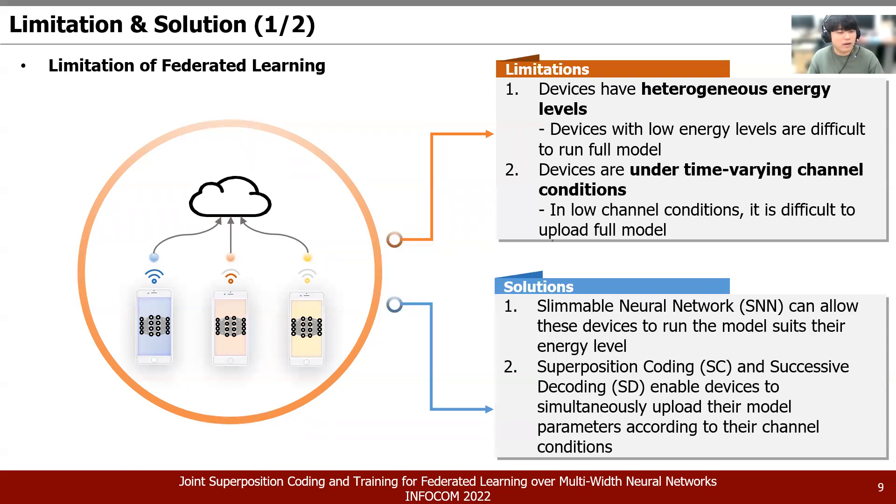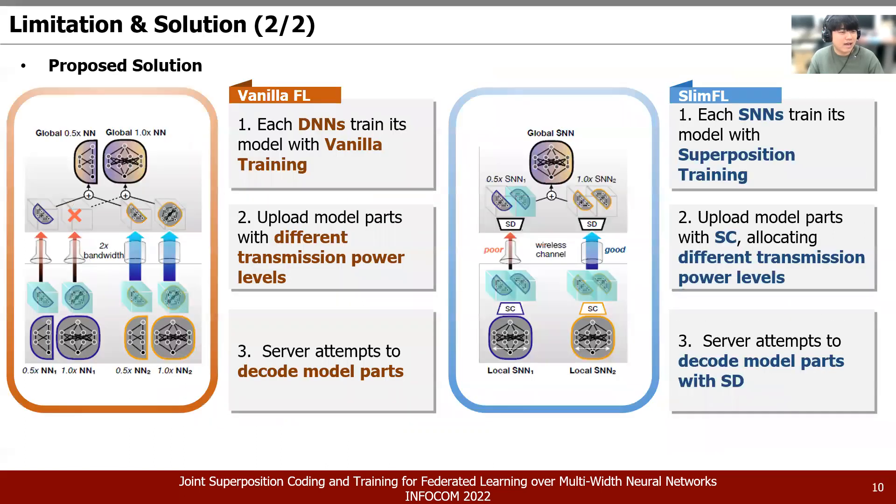Let's talk about our proposed solution. We combine Slimable neural network and Federated Learning with the superposition coding and successive decoding method. This enables devices to simultaneously upload their model parameters according to their channel conditions. Also, performing effort using a Slimable neural network architecture enables the training of multi-width models at once. In this slide, we will directly compare the current effort and our proposed SlimFL.